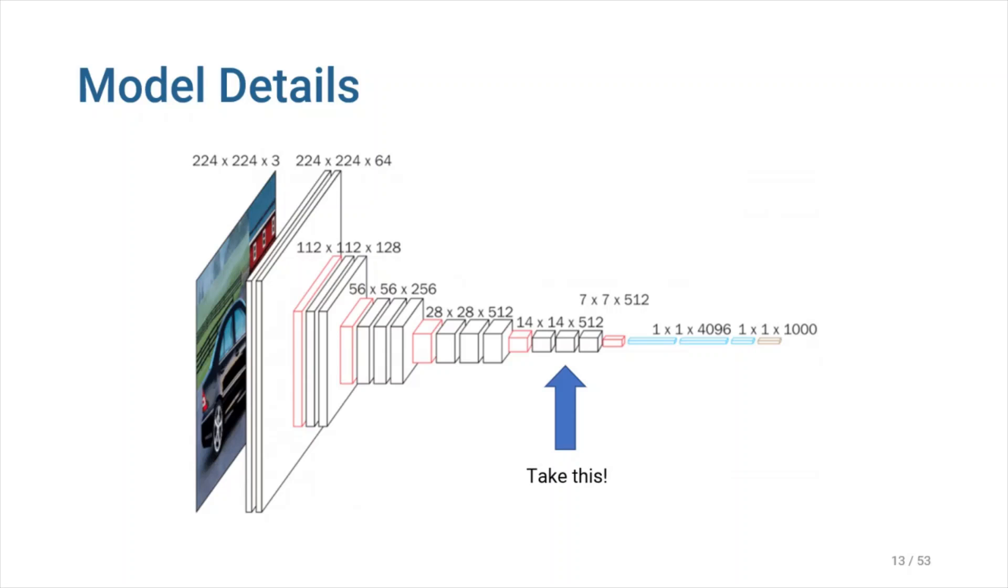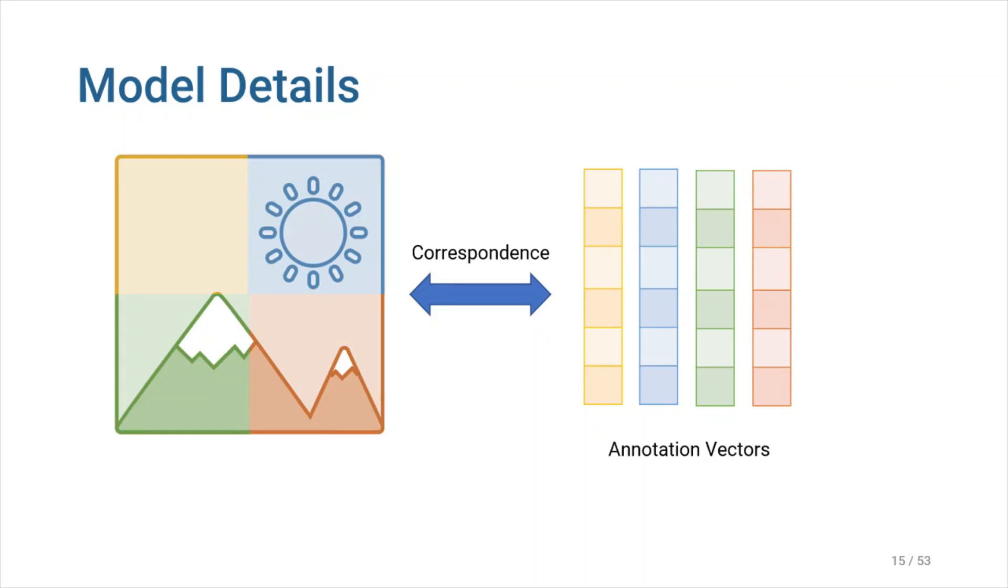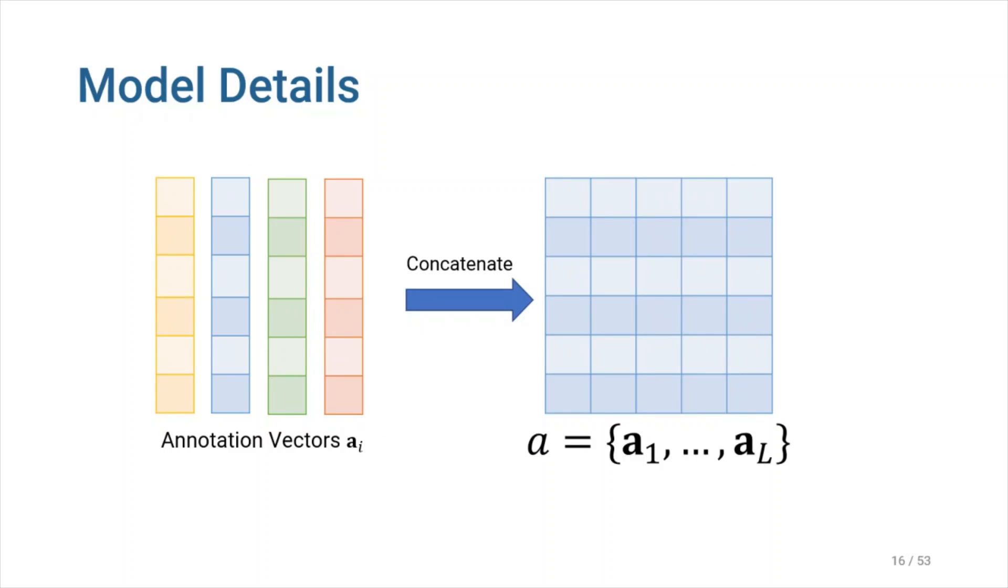They take a 14 by 14 by 512 feature map. And by flattening each one of the 14 by 14 matrices in the feature map, we turn them into a set of vectors which we refer to as annotation vectors. The extractor produces L vectors, each of which is a D-dimensional representation corresponding to a part of the image. By concatenating these annotation vectors, we generate matrix A, which is the output of the CNN encoder, which is then used by the attention model to determine which sections of the image are more relevant in generating the next word in the image caption generation task.